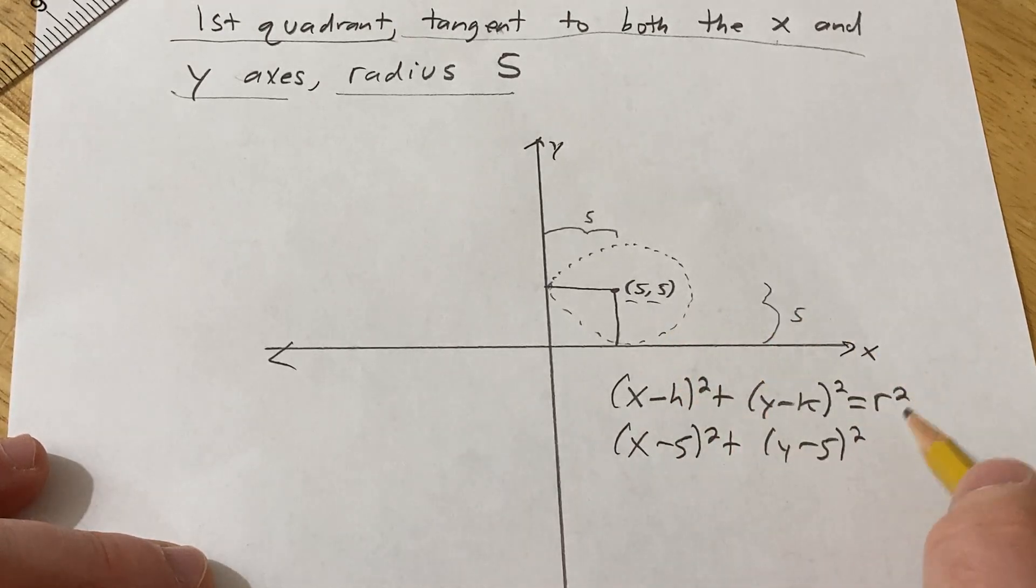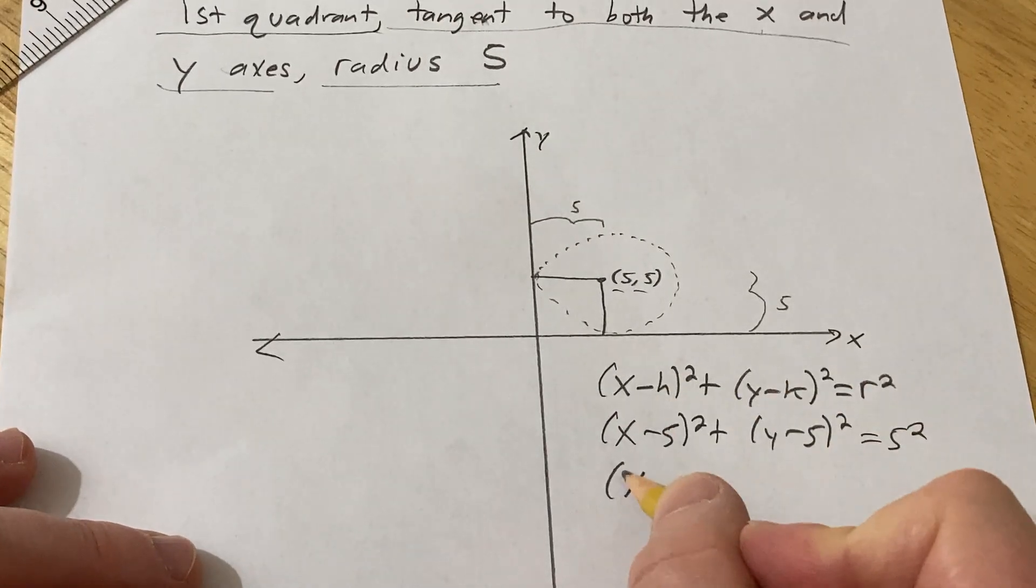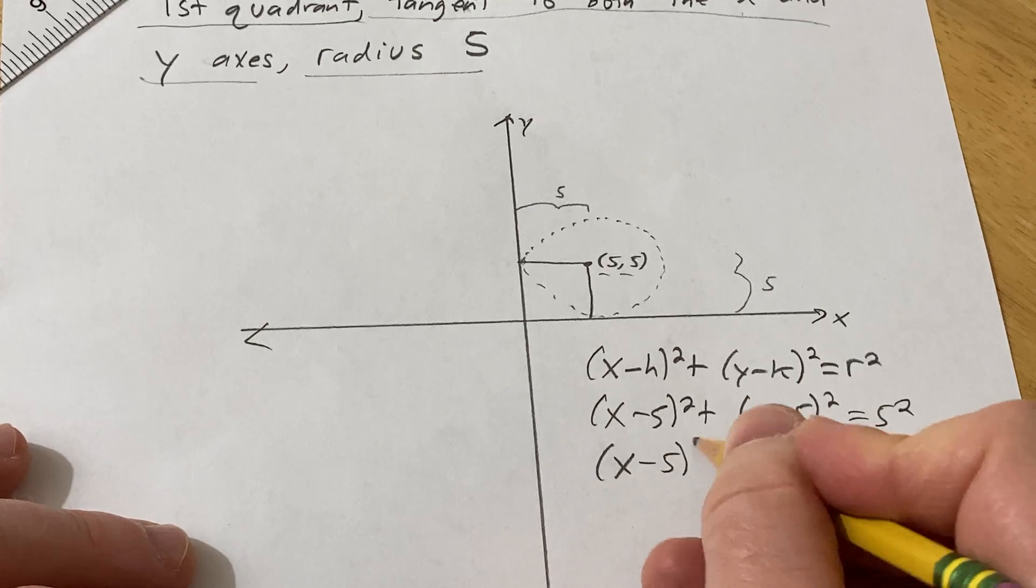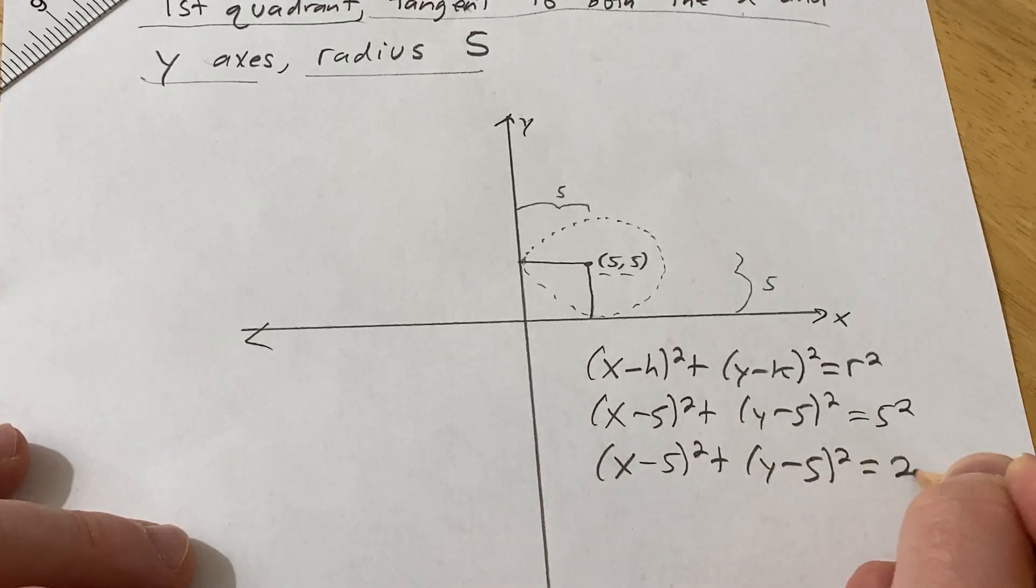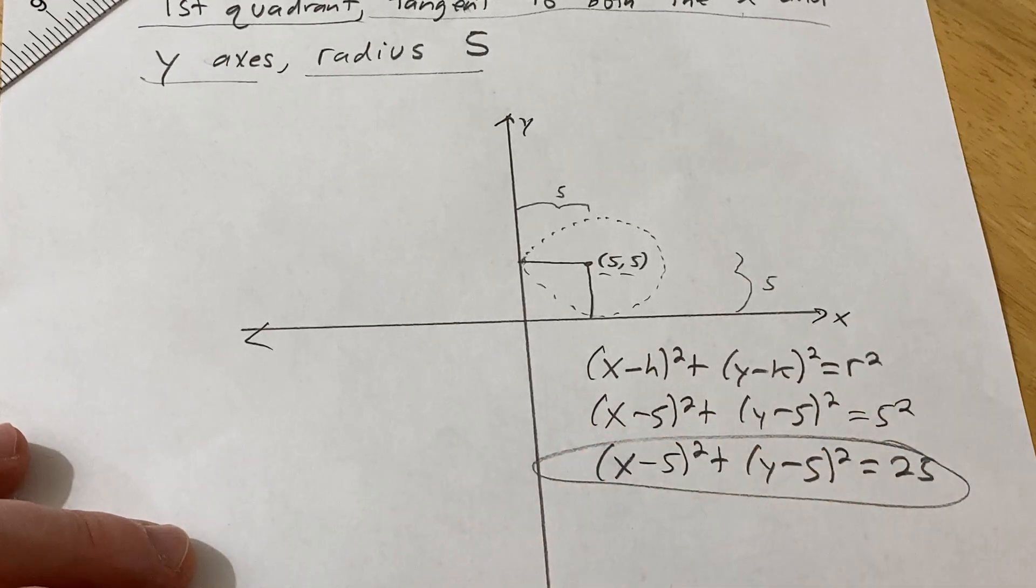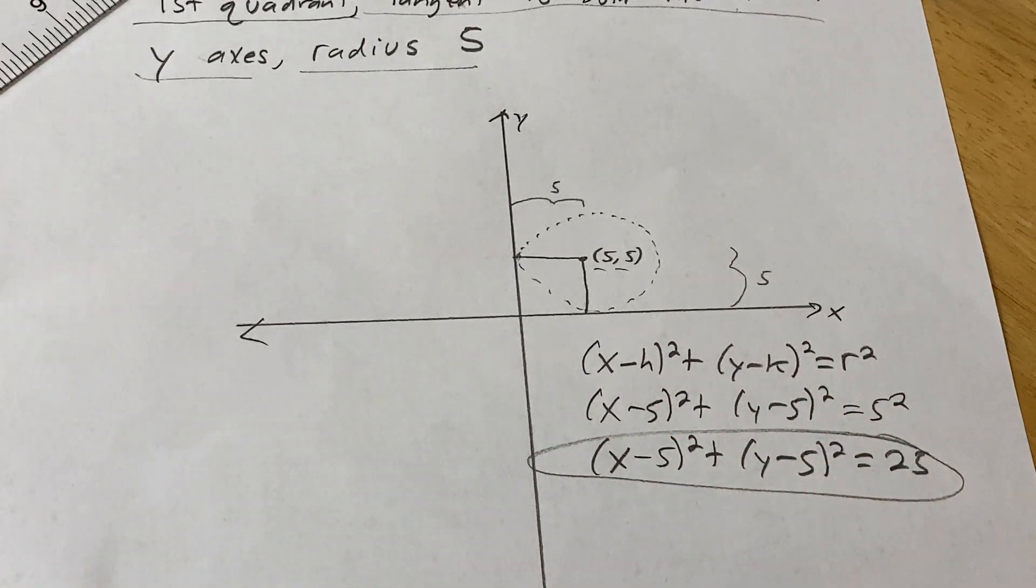Our radius is 5, so that's 5 squared. All kinds of 5s. The final answer will be x minus 5 squared plus y minus 5 squared equals 25. That would be the final answer. I hope this video has been helpful. Good luck.